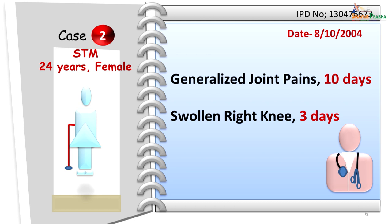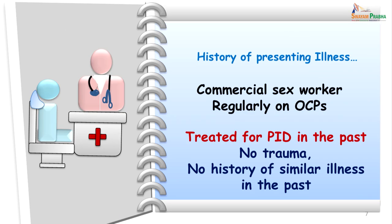Let us take another case. This lady who was 24 years old, a commercial sex worker, walked into the clinic with the help of a walking stick. She complained of inability to walk since 2 to 3 days. She also had generalized joint pains which started about 10 days back, and she complained of a swollen right knee. She was regularly on oral contraceptive pills and gave a significant history of being treated in the past for pelvic inflammatory disease for about 4 weeks. She did not give any history of trauma and no other similar joint complaints in the past.